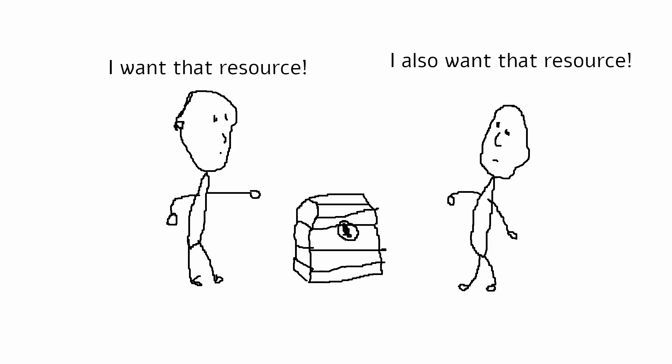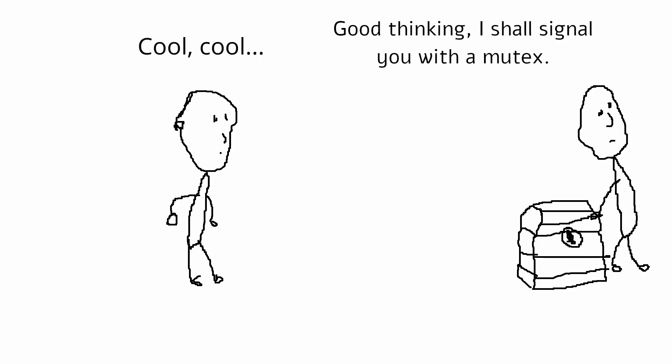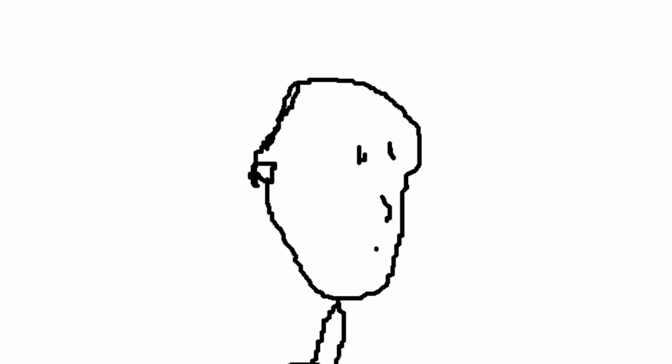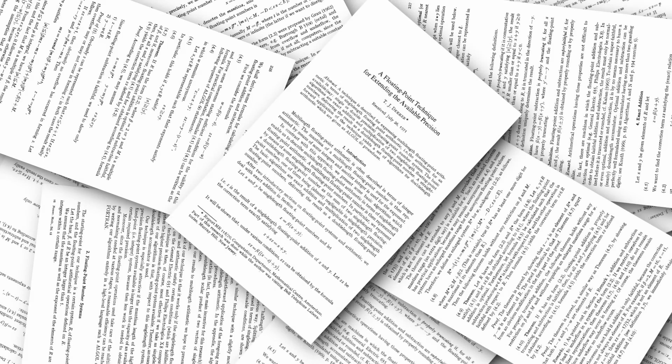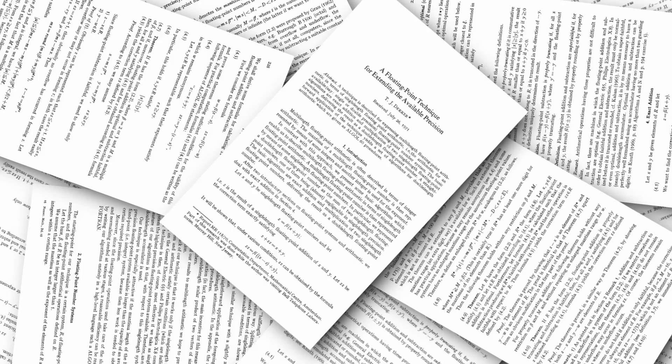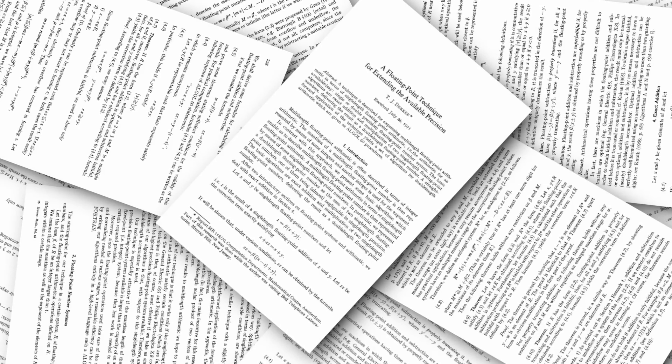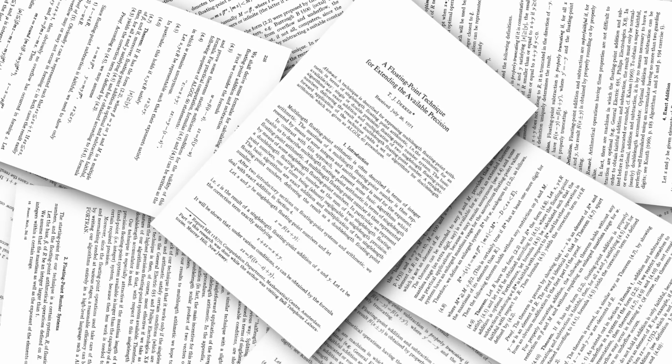TJ Dekker is known in the computer science world for a couple of things. For one thing, he was the first person to solve the problem of how to implement mutual exclusion, which is essentially how to create a mutex. His solution to this problem was attributed as the first correct solution by none other than Mr. Edsger Dijkstra himself. Today, that solution is called Dekker's algorithm. But apart from this, in 1971, he wrote a paper called A Floating Point Technique for Extending Available Precision.